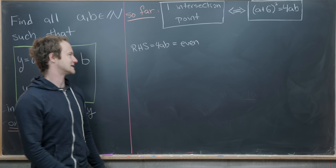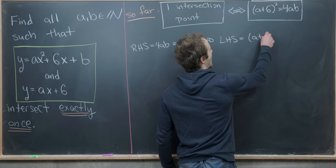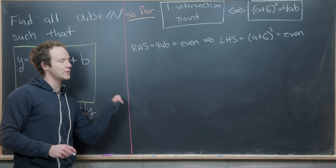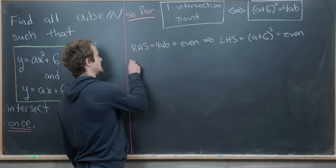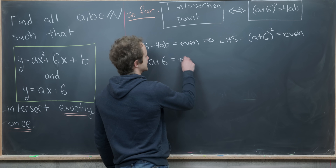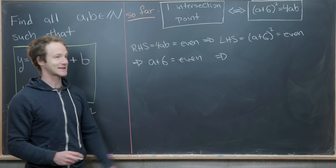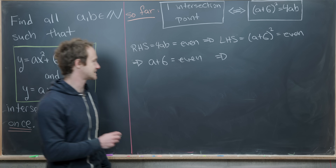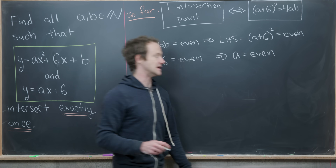Since the right-hand side 4ab is even, the left-hand side (a + 6)² must also be even. If a perfect square is even, the original number must be even, so a + 6 is even. Since 6 is even, subtracting it tells us a itself must be even.